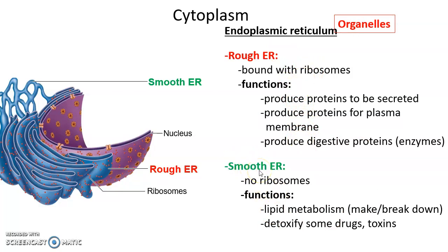The smooth endoplasmic reticulum is smooth because it does not have any ribosomes bound to it. Its functions include lipid metabolism — it can be involved in making or breaking down lipids — and also the detoxification of some drugs and toxins that the cells might be exposed to.